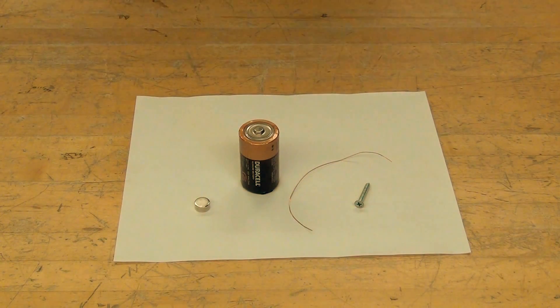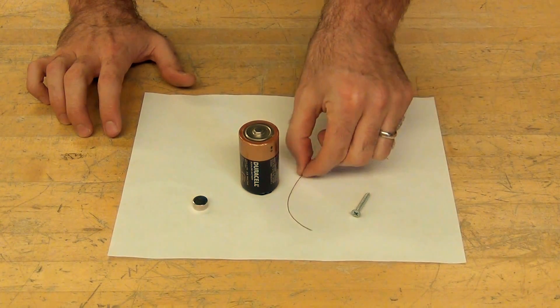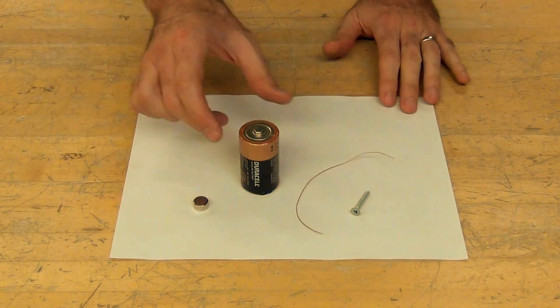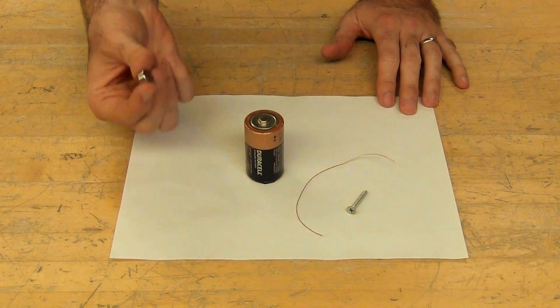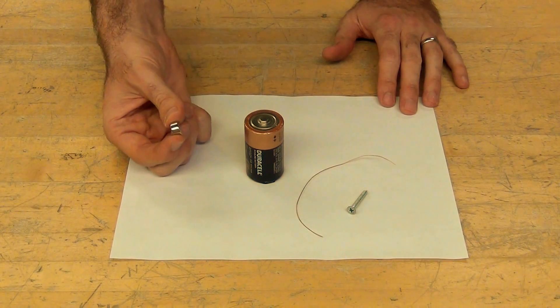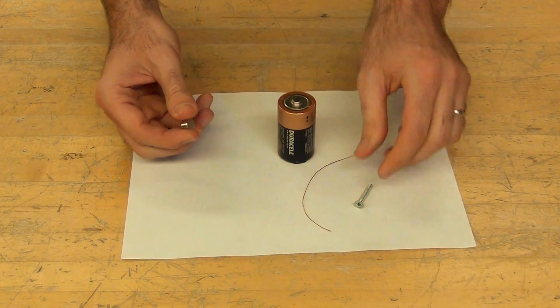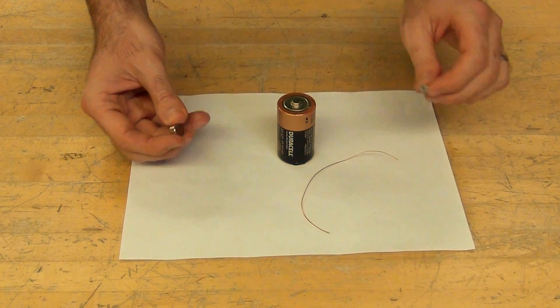To build a simple homopolar motor we need four pieces. We've got a screw, bare copper wire, a battery, and a strong conductively coated magnet. These neodymium magnets are brittle and fairly strong. Don't drop them, don't let them slam into anything, they can shatter.